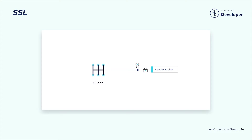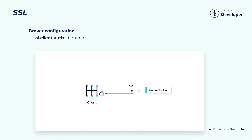How can we configure the broker to ensure the Kafka principal associated with the connection represents the client's identity? You can configure the SSL security protocol to require client authentication by setting ssl.client.auth equals required in the broker configuration.